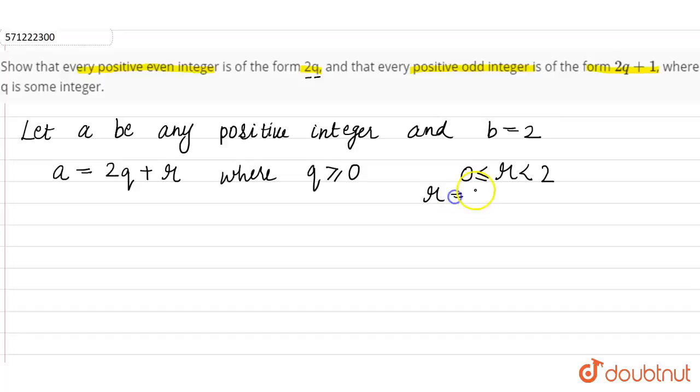So the values of R are 0 and 1. There are two cases: Case 1, where R equals 0, and Case 2, where R equals 1.